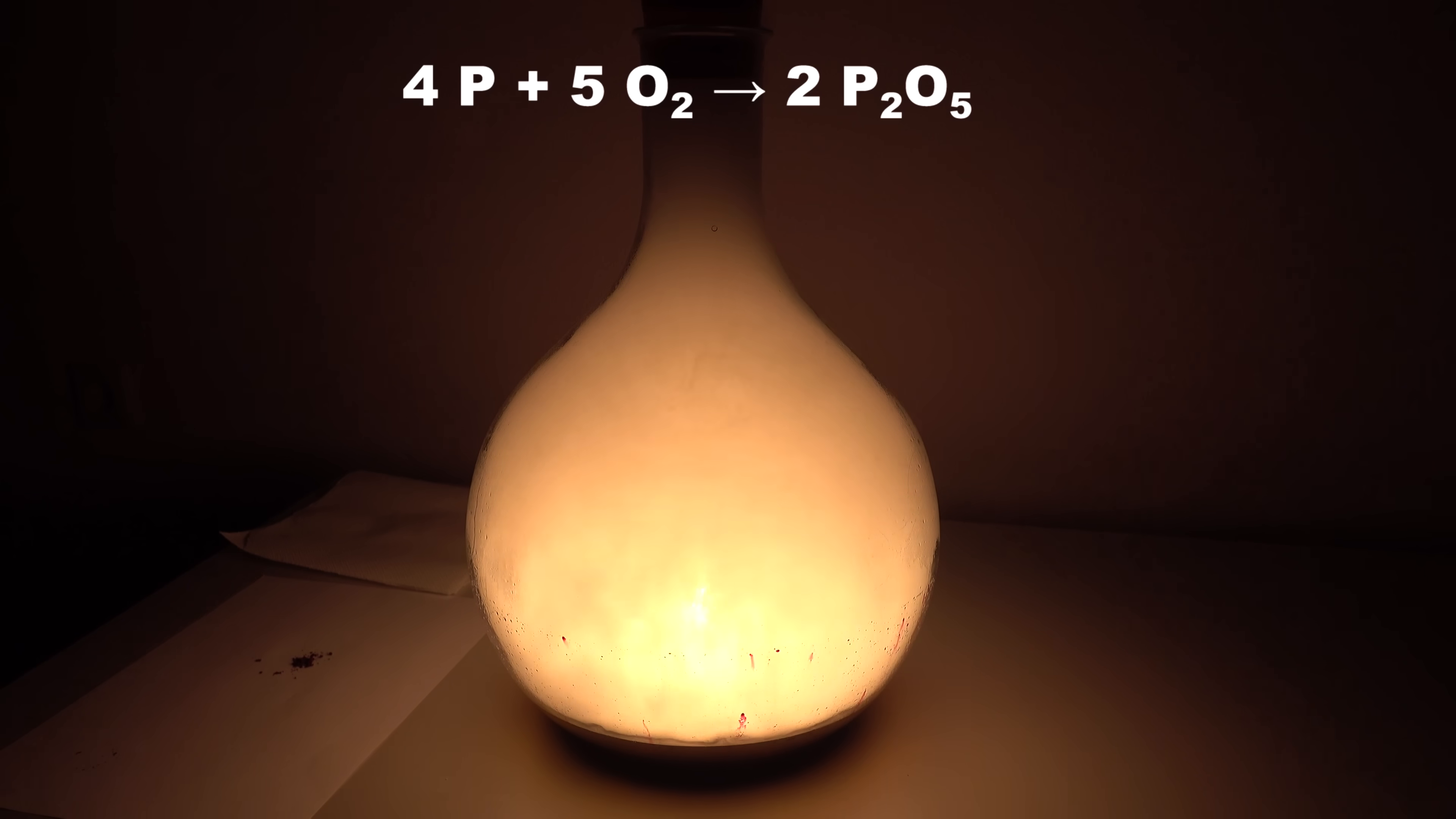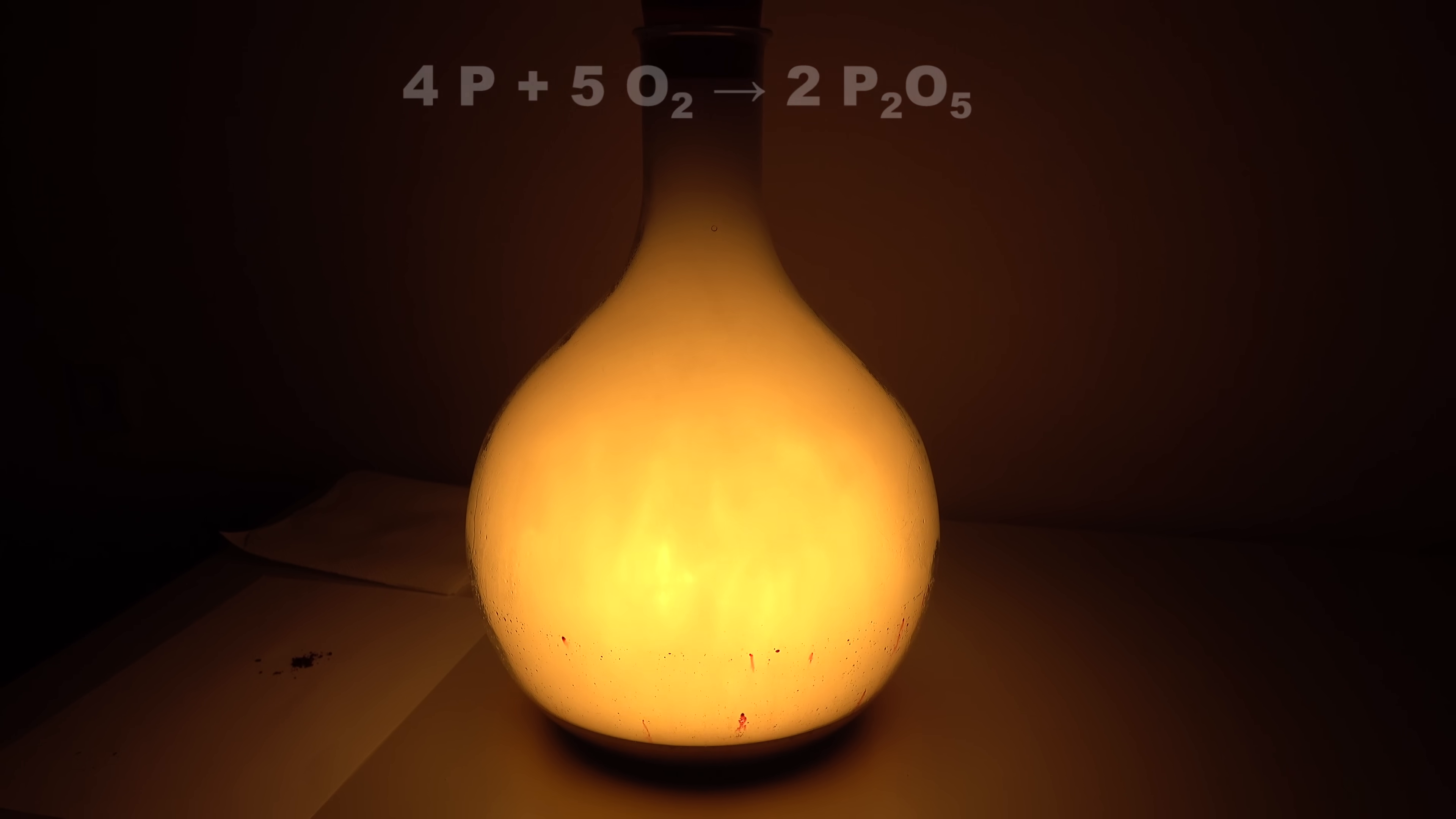The smoke produced in the bulb is nothing more than phosphorus oxide, from which it is possible to obtain calcium zinc phosphate, which is used for coating the insides of fluorescent lamps as luminophore.